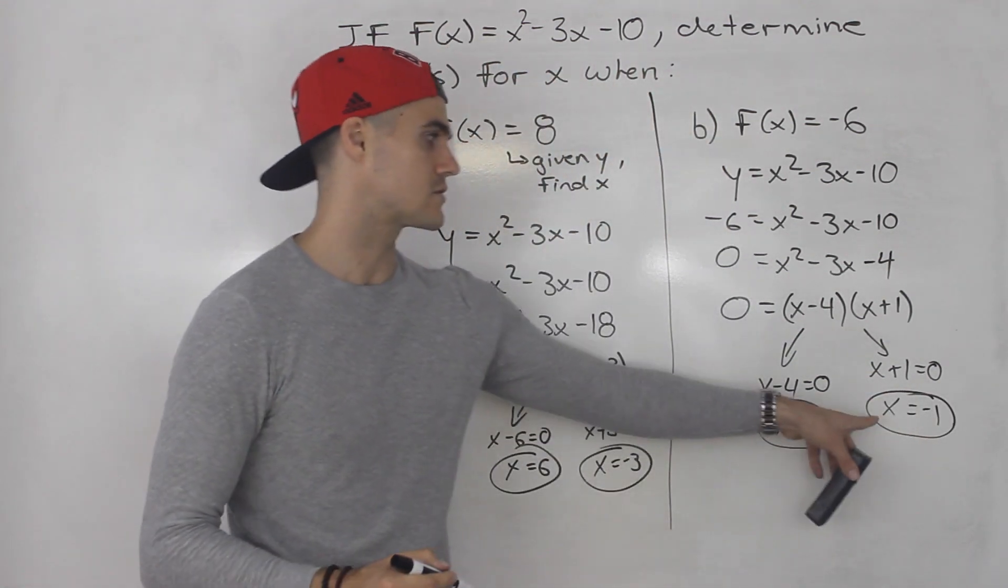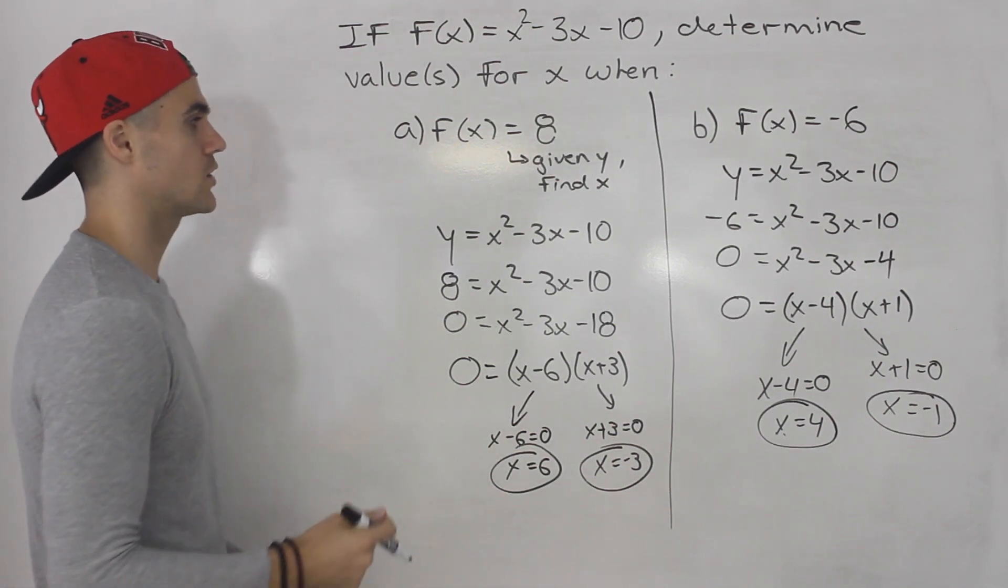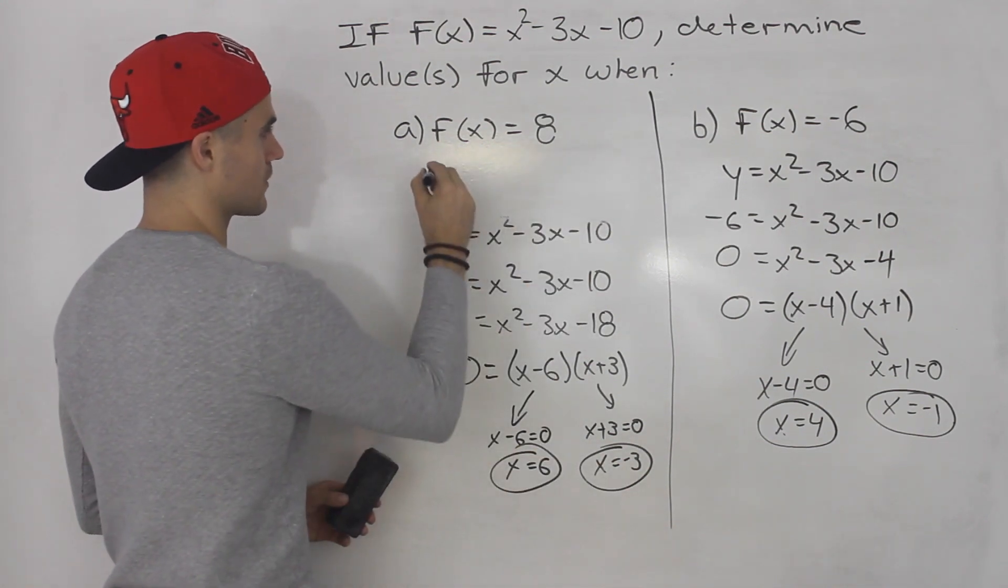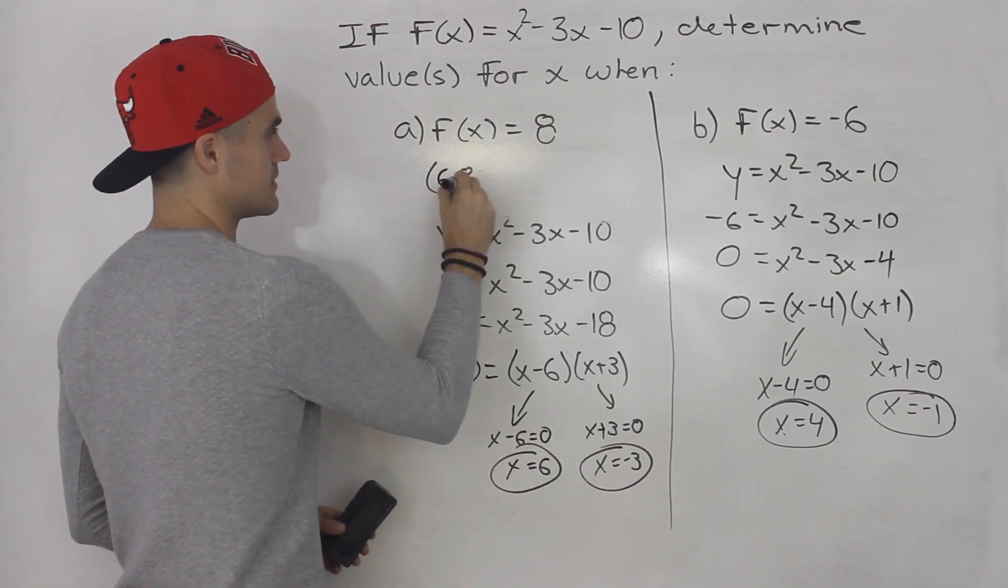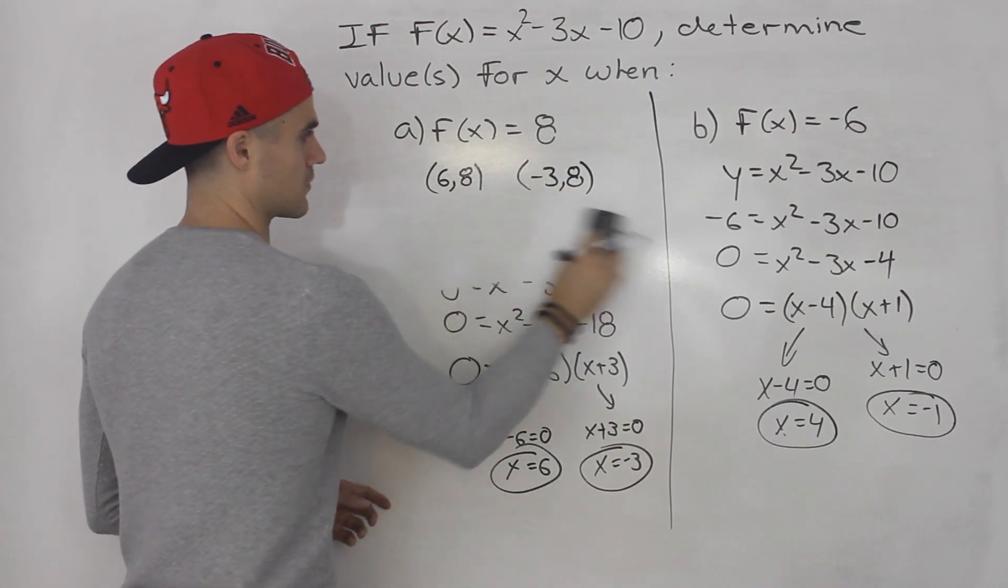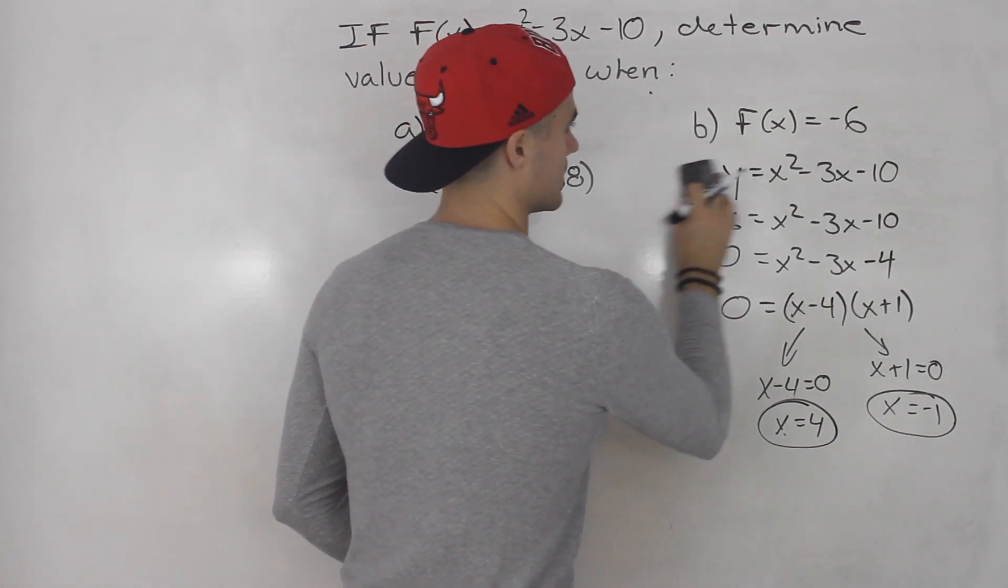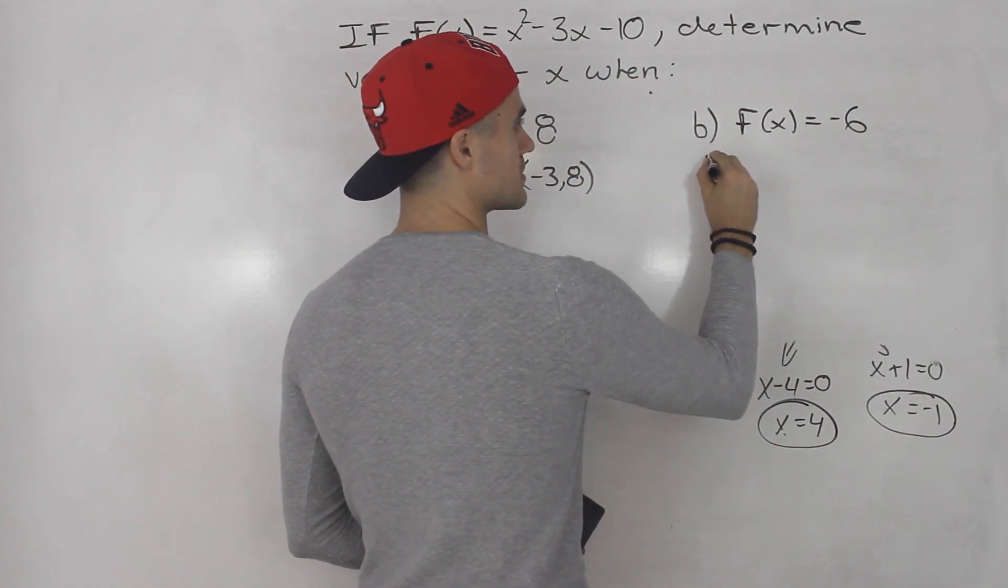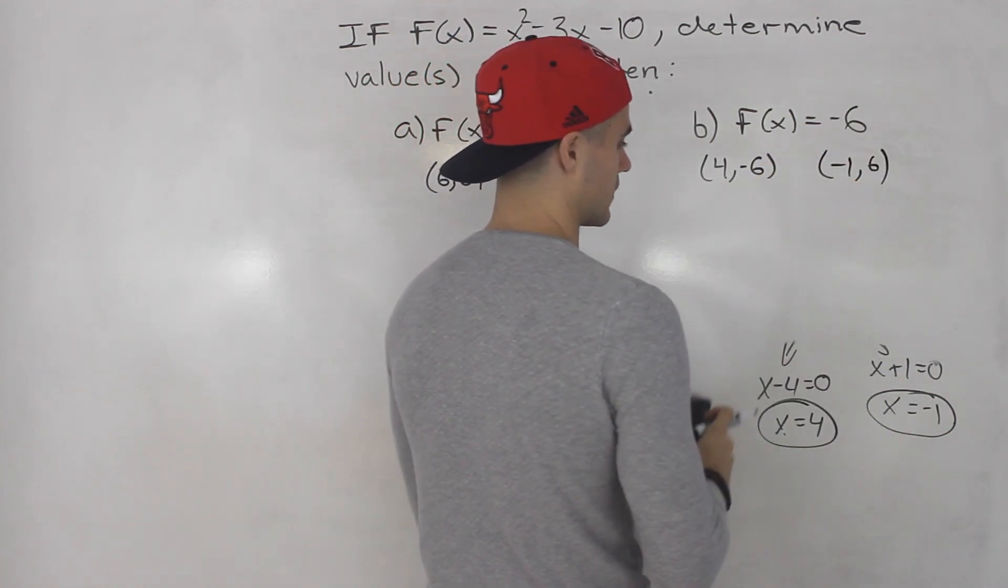So those are the two answers for part b. Now you can also show how this scenario looks visually on a graph. For part a we got the x values 6 and -3 which means this function has coordinates (6, 8) and (-3, 8). And then for part b we found x values 4 and -1. So (4, -6) is a coordinate on the function. (-1, -6) is a coordinate on the function.